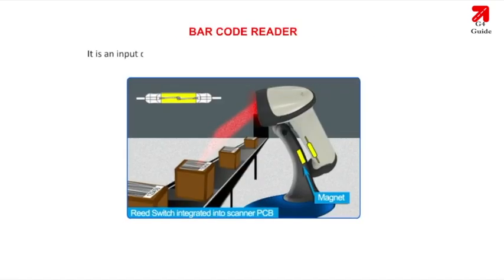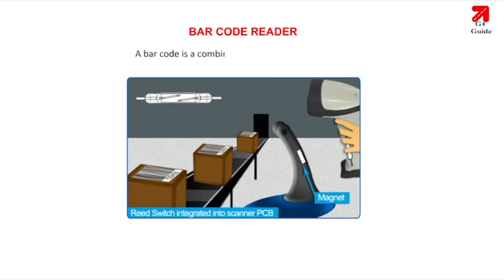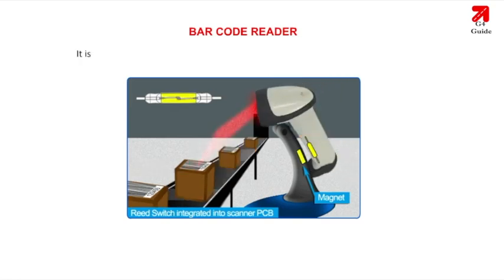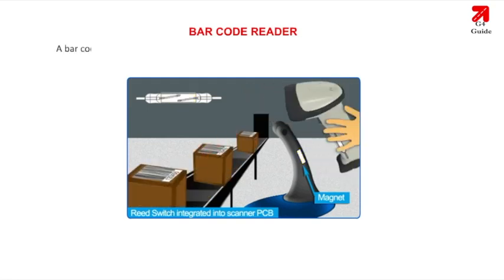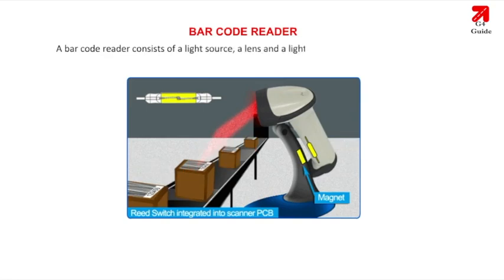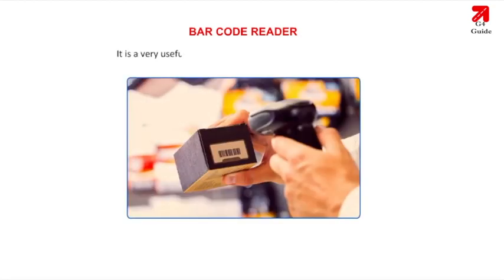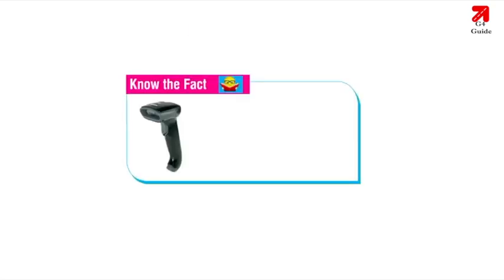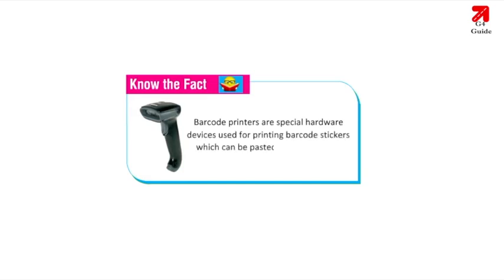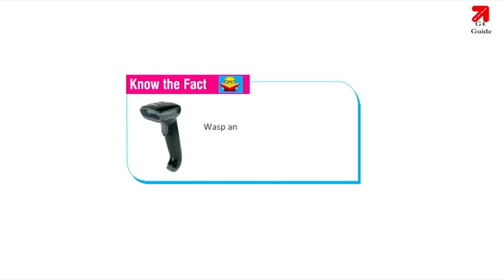Barcode Reader is an input device used for reading barcodes present on various products. A barcode is a combination of dark and light stripes — a computer-readable representation of information in visual format. A barcode reader consists of a light source, a lens and a light sensor for translating optical impulses into electrical signals. It is very useful for billing and inventory applications. Barcode printers are special hardware devices used for printing barcode stickers. Wasp and Barcode Pro are special software for scanning and printing barcodes.